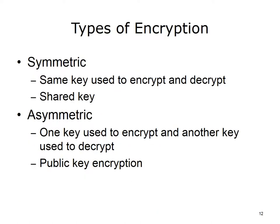The previous example was an example of symmetric encryption, where the same key is used to encrypt and decrypt. Symmetric encryption is also referred to as shared key encryption. Asymmetric key encryption uses two keys, one to encrypt the data and another to decrypt. Typically, the key to encrypt, called the public key, is made available so that anyone can send an encrypted message to the receiver. The receiver is the only one with the private key used to decrypt the ciphertext.